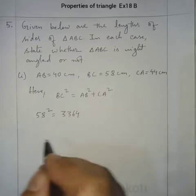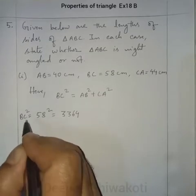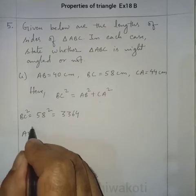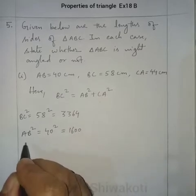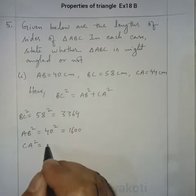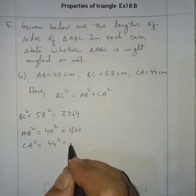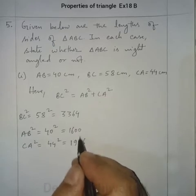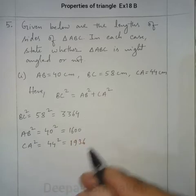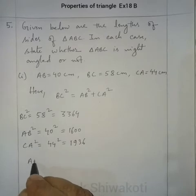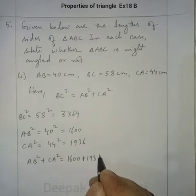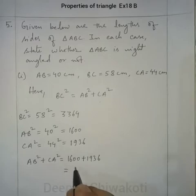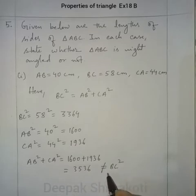Now AB² = 40² = 1600, and CA² = 44² = 1936. The sum of these two should equal BC² if it is a right-angled triangle. So AB² + CA² = 1600 + 1936 = 3536.